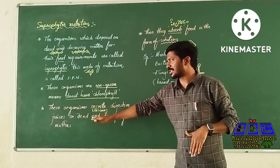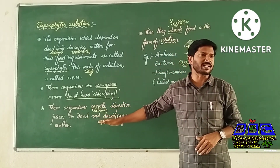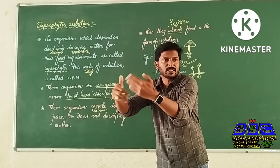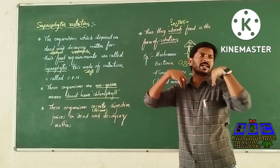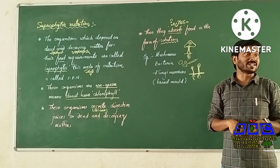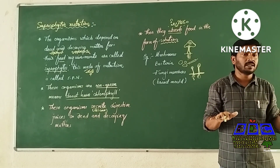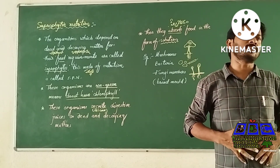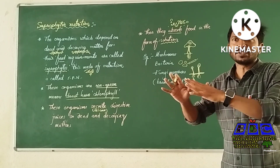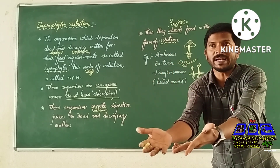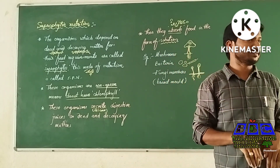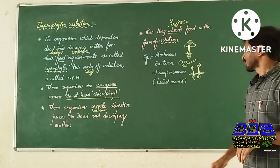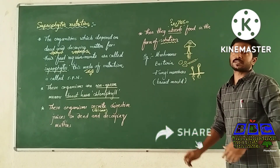They secrete digestive juices onto the dead and decaying matter and digest it. So these are the examples of saprophytic nutrition.